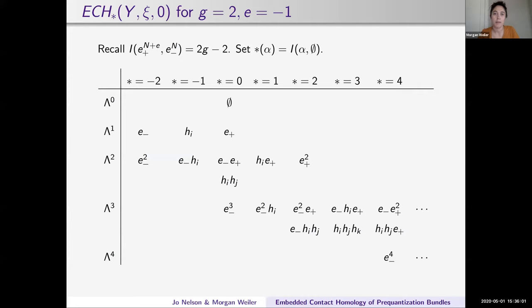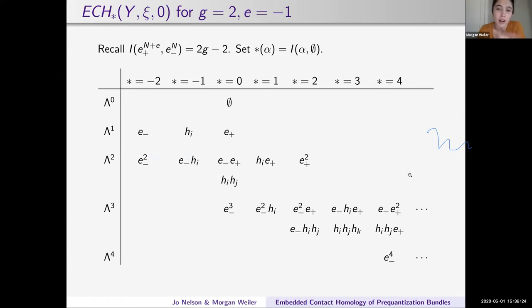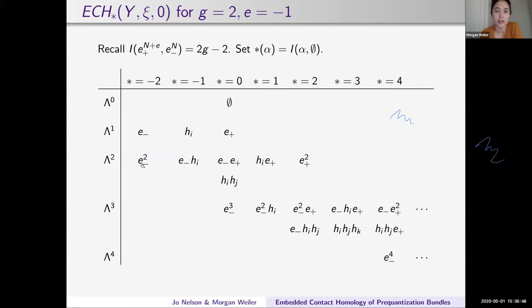If you plug in E plus to the N plus and E minus to the N as alpha and beta, you get that the index difference is 2G minus 2. Here's an example of how the ECH splits based on the degree of exterior product. In this table, the base is genus 2 and the Euler number is minus 1. We look at exterior products 0 through 4 and ECH index negative 2 through 4, where the star is the index difference between the generator and the empty set. For example, the empty set is E plus to the 1 minus 1. The empty set appears at grading 0, and at grading minus 2, which in this case is 2 times (2 minus 2) times (2 minus 2), you get E minus.